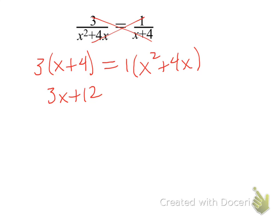Distributing and simplifying each side, we get 3x plus 12 equals x squared plus 4x. And so now since I have an x squared, that should make an alarm go off in your head that says I've got to have to factor this.